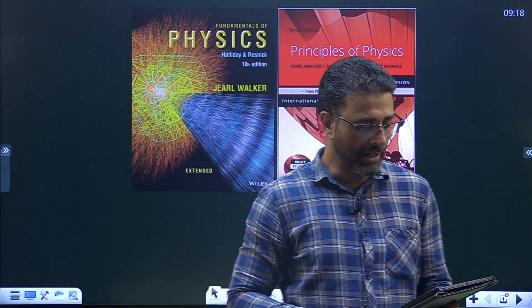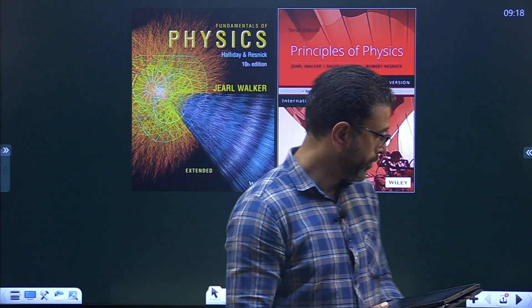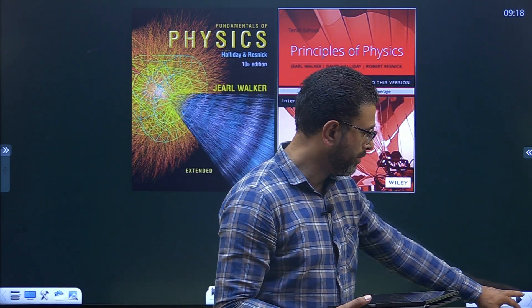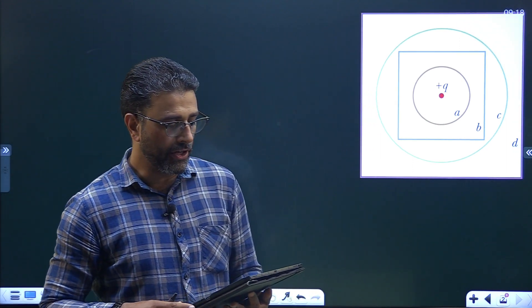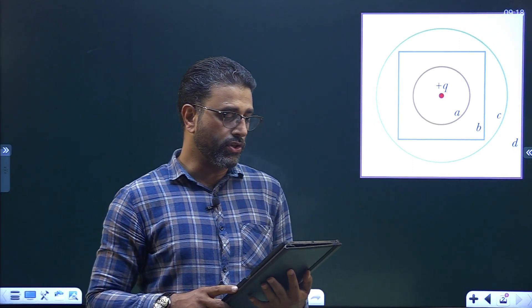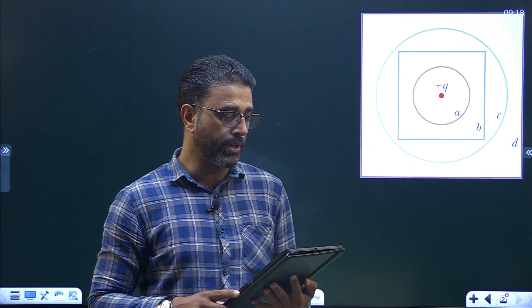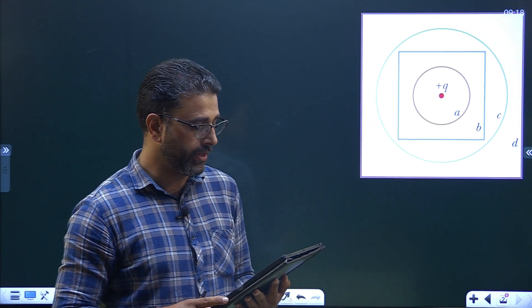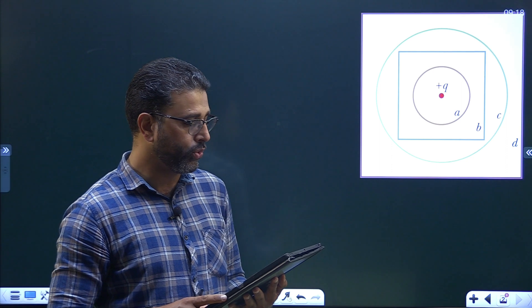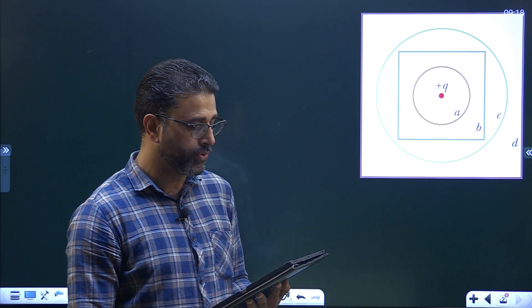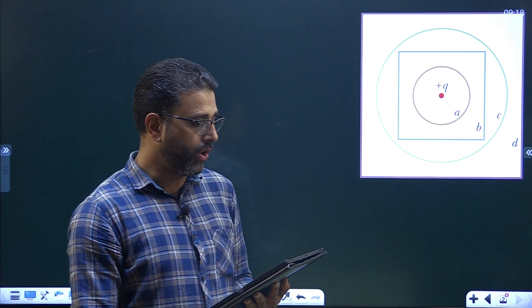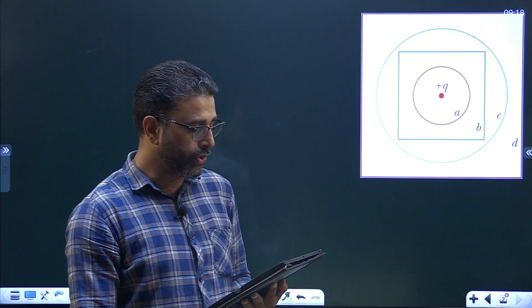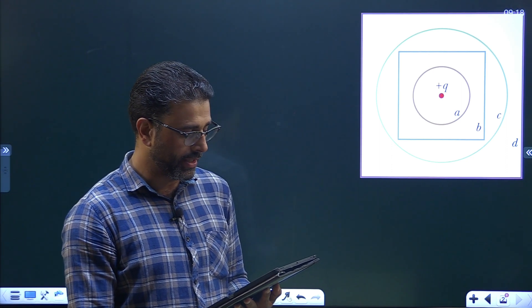Let me read out the question. I have a diagram here. The figure shows in cross-section two Gaussian spheres and two Gaussian cubes. They are centered on a positively charged particle.